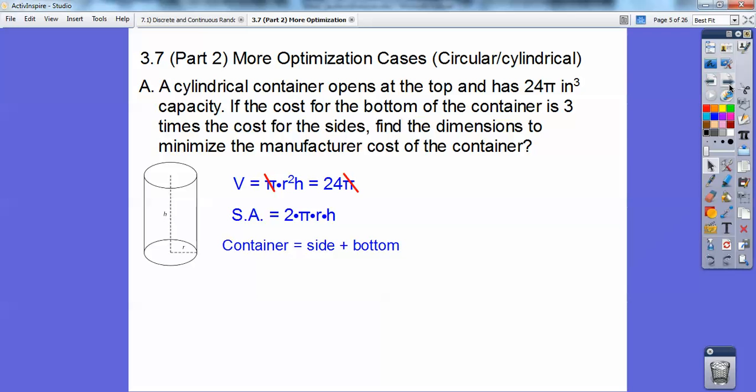The container equals the side plus the bottom. The side is 2πrh because if I could cut this thing like a piece of paper, cut it right up the middle, it would unravel into a rectangle. The length is the circumference, 2πrh—just as if I cut it, it's that circle unraveled into the length of the rectangle. And πr² is the bottom.